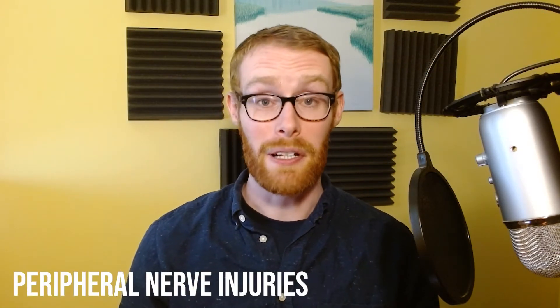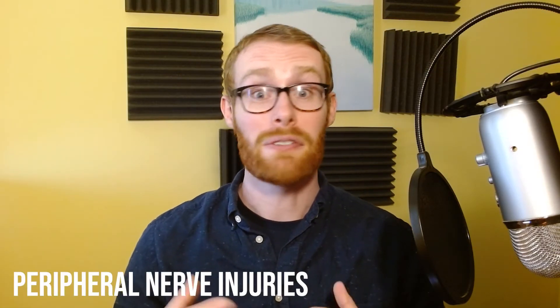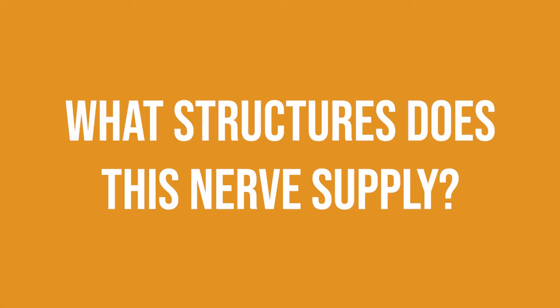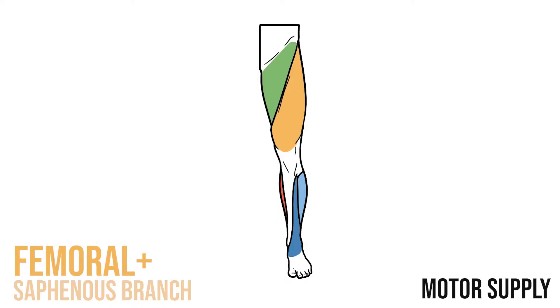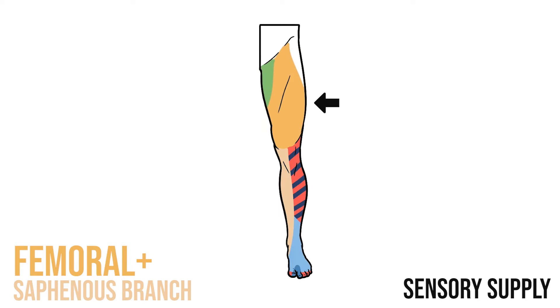First, let's imagine a patient with a severed peripheral nerve, for example the femoral nerve. How could this present? To understand that, you need to ask yourself three important questions. First, what structures does this nerve supply? In this case, the femoral nerve supplies muscles in the anterior compartment and skin over the anterior thigh and medial leg.